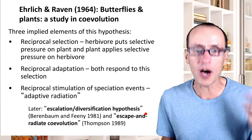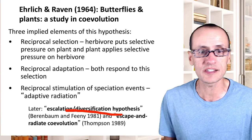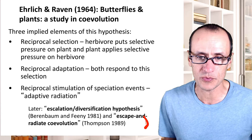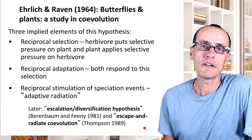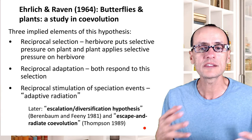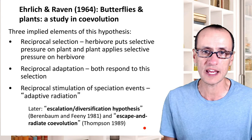The escalation and diversification hypothesis is a modification of Ehrlich and Raven's approach. Thompson was the one who coined the 'escape and radiate' terminology. So what evidence is there consistent with this hypothesis of reciprocal selective impacts and interactions that could lead to diversification of plants and insects?